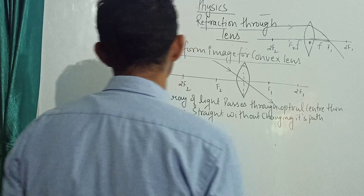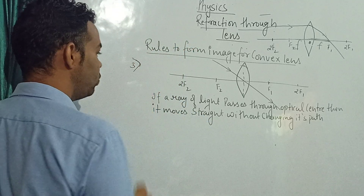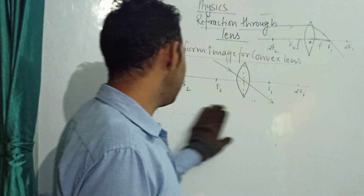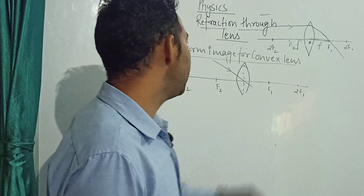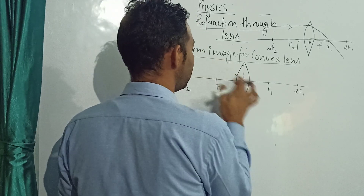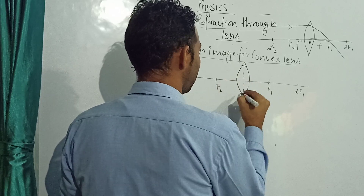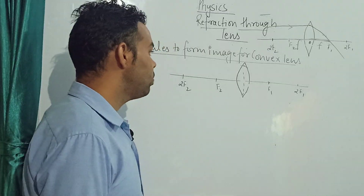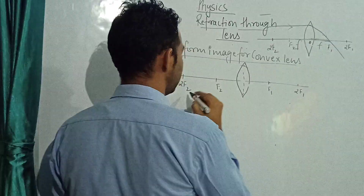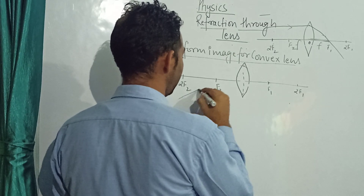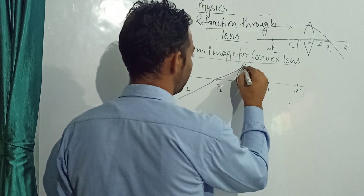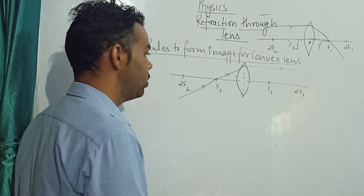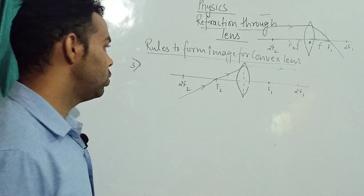Now the third rule. These rules are very easy and you can draw the ray diagrams very easily. The third rule is: if a ray of light is passing directly through the principal focus, then after refraction it will become parallel to the principal axis. This is just the opposite of the first rule.